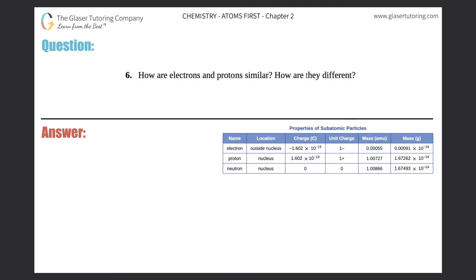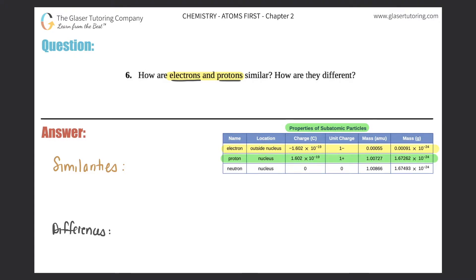Number six. How are electrons and protons similar, and how are they different? I gave you a chart of the properties of some atomic particles. We're talking about electrons and protons, so we don't even care about the neutrons. I'm only going to highlight the electron column and the proton column. So we don't care about neutrons for this question.